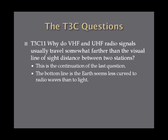Why do VHF and UHF radio signals usually travel somewhat farther than the visual line of sight distance between two stations? The bottom line is the earth seems less curved to radio waves than to light. That's the answer on the exam. VHF and UHF signals bend slightly towards the earth, which allows them to travel a little bit farther than the visual line of sight.